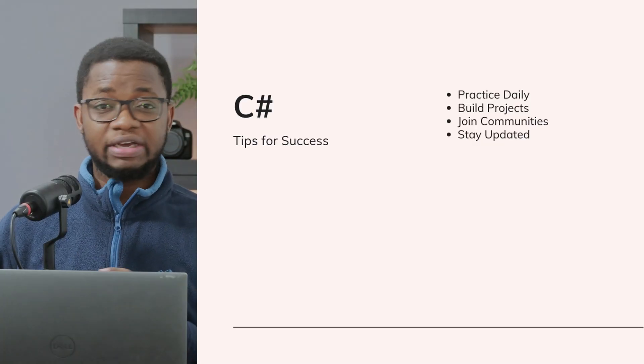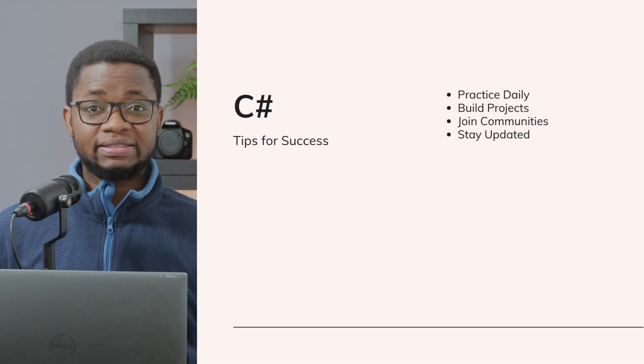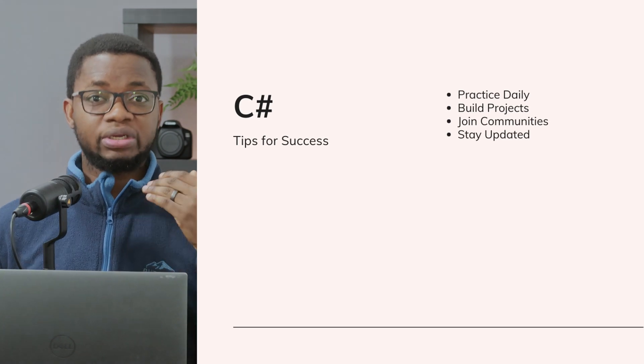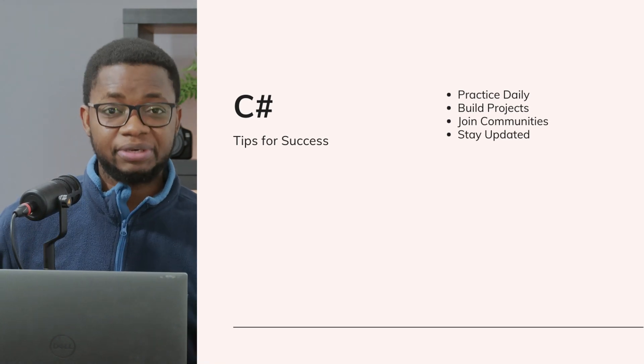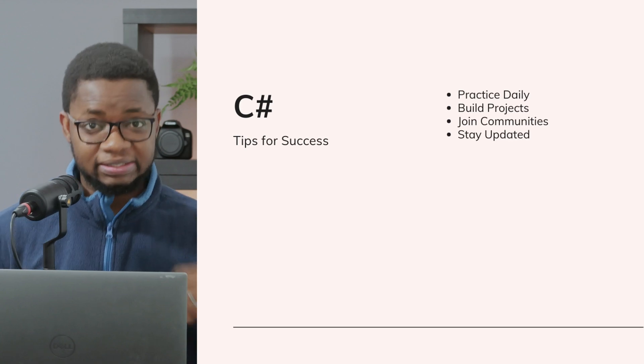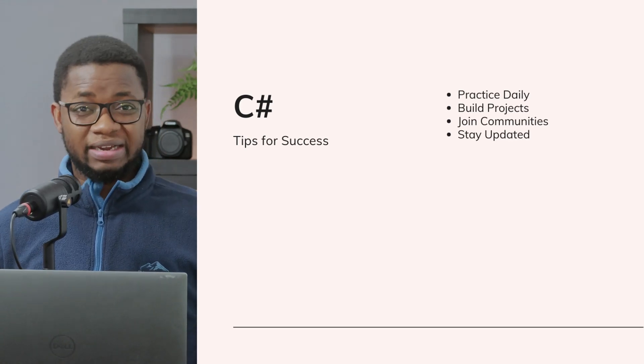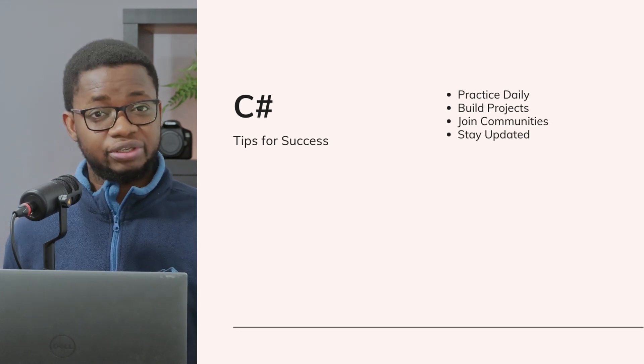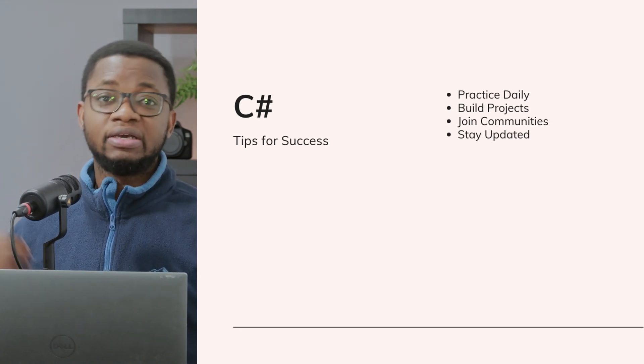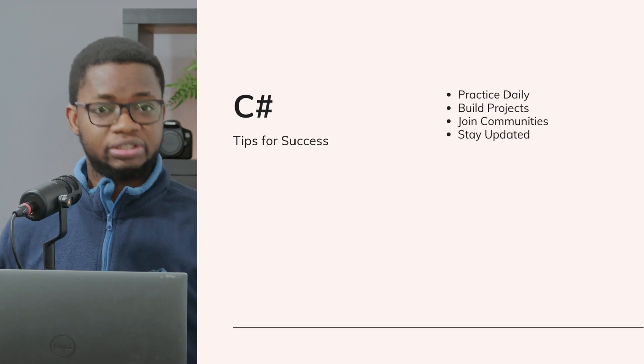I'll leave you with this final bonus section: tips for learning C# effectively. The first tip, which I advise anyone in any field, is to practice daily. Write code every day, even if it's just for 30 minutes. Practice your trade daily — that is how you get better. Try to write code every day so you keep it fresh in your mind and build up the muscle memory to build projects.